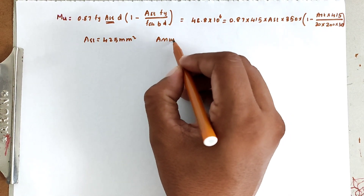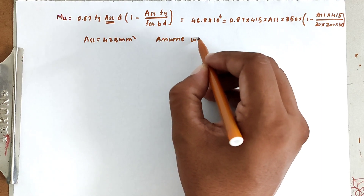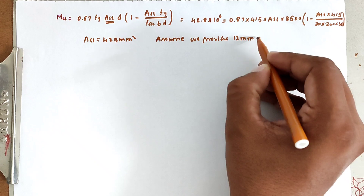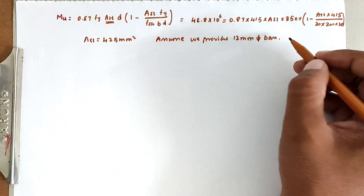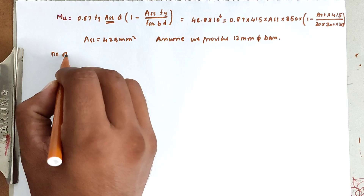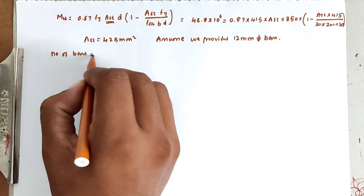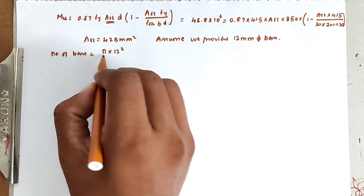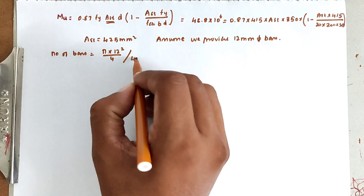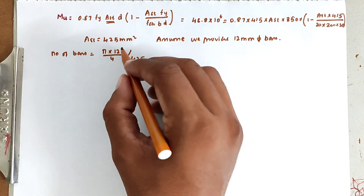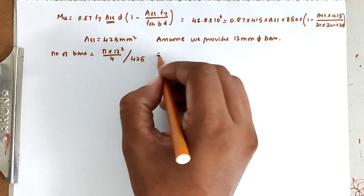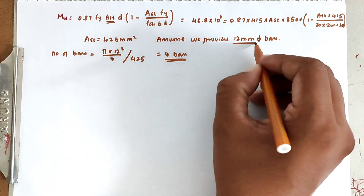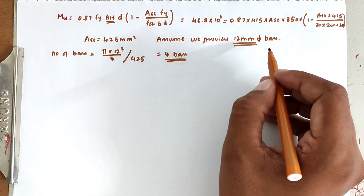Assume we provide 12 mm diameter bars. Number of bars = total AST / (π × 12² / 4) = 425 / (π × 144 / 4) ≈ 4 bars. So provide 4 numbers of 12 mm diameter bars, giving an actual AST of 452 mm².